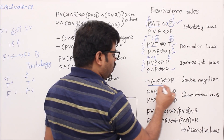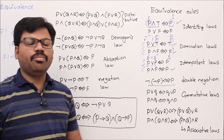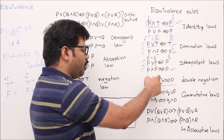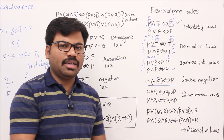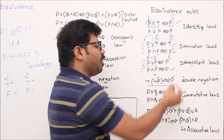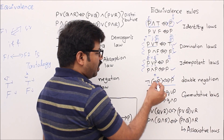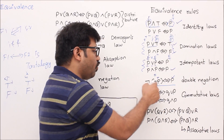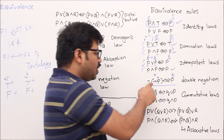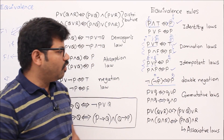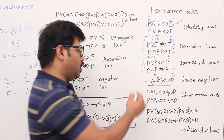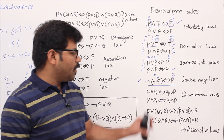Now the double negation rule: ¬¬p is equivalent to p. It is easy to understand. When p is true, ¬p becomes false, and ¬(¬p) becomes ¬false which is true — exactly like p. When p is false, ¬p becomes true, and ¬true becomes false — right side also false. Both have the same truth value for true and false cases, so the double negation rule holds: ¬¬p ≡ p.